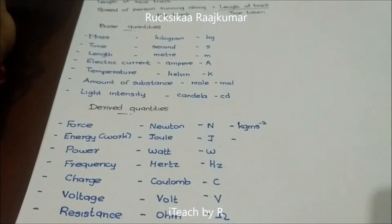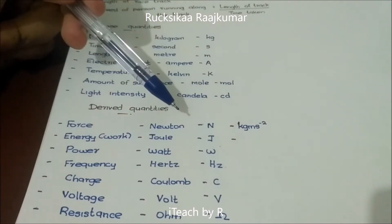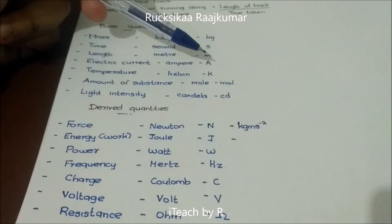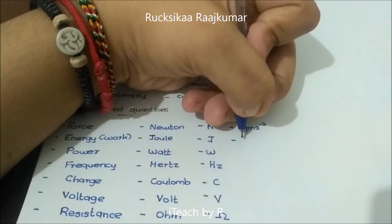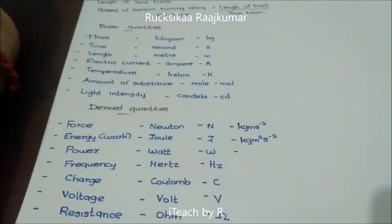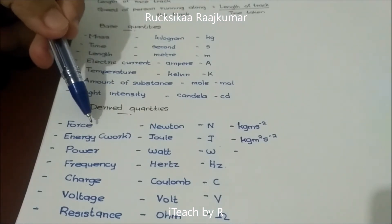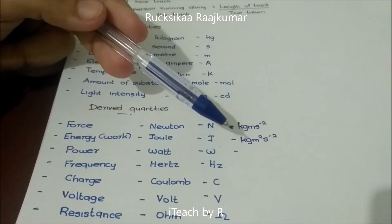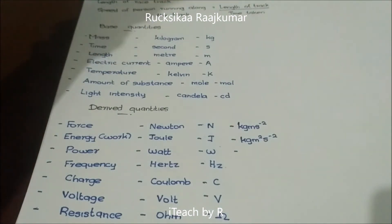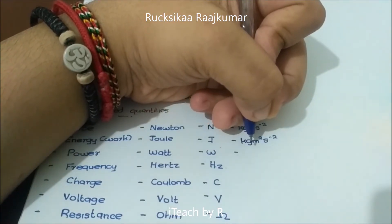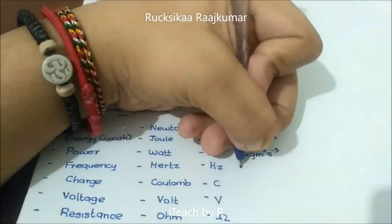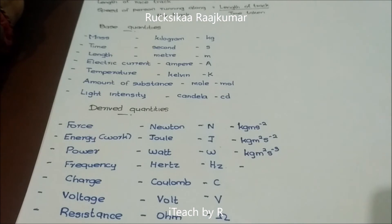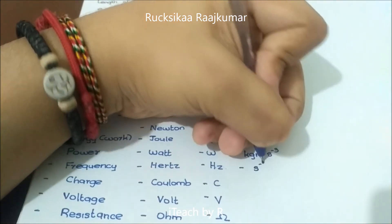Work is force times distance, so taking the base unit equivalent of force and multiplying by meters gives kilogram meter squared per second squared — this unit is the Joule. Power is energy divided by time taken, so kilogram meter squared per second squared divided by seconds gives kilogram meter squared per second cubed — this is the Watt. Frequency is equal to one over time, so its base unit equivalent is one over second, written as s to the power of minus one — this is the Hertz.